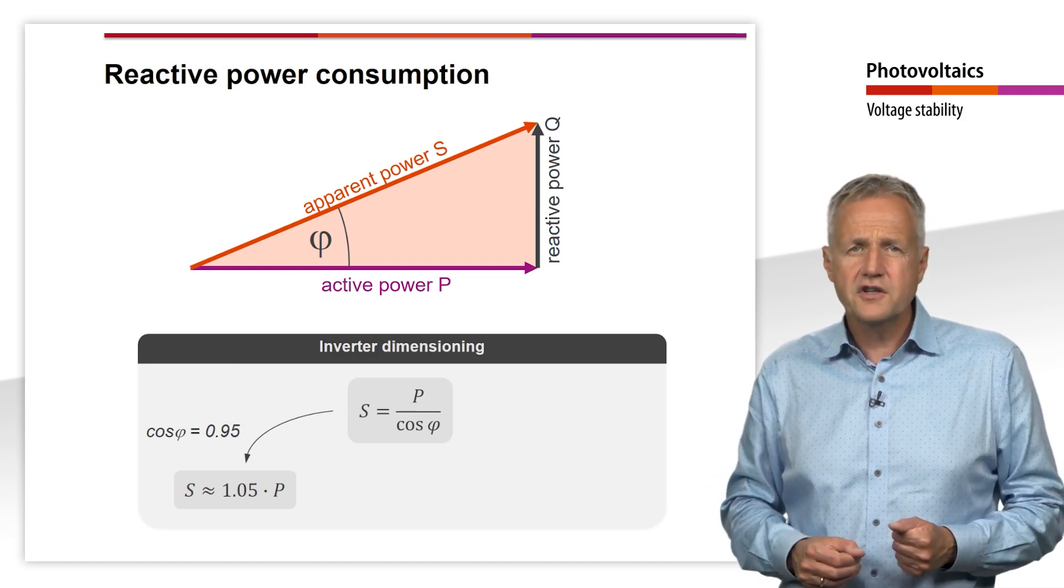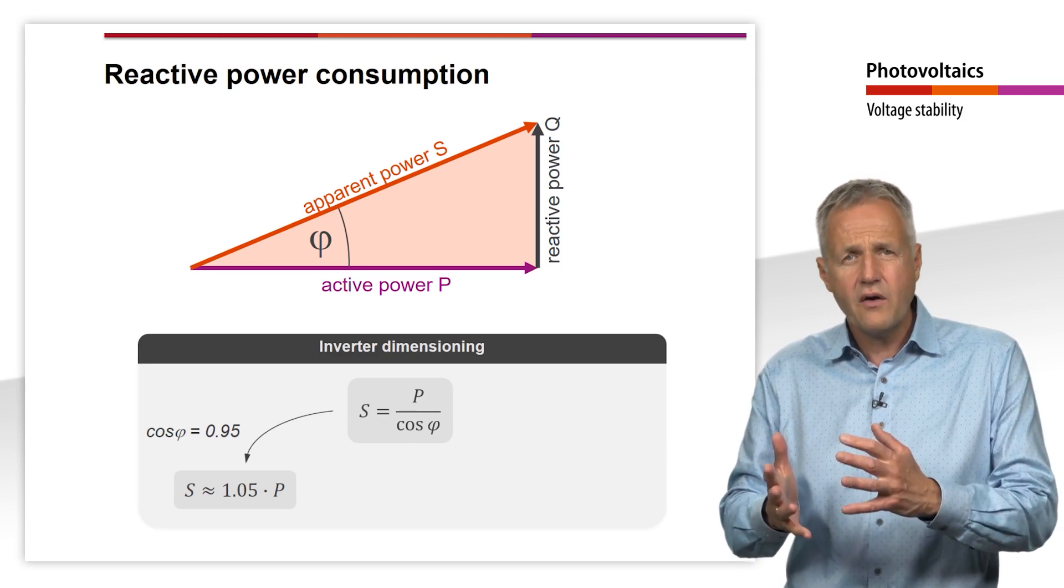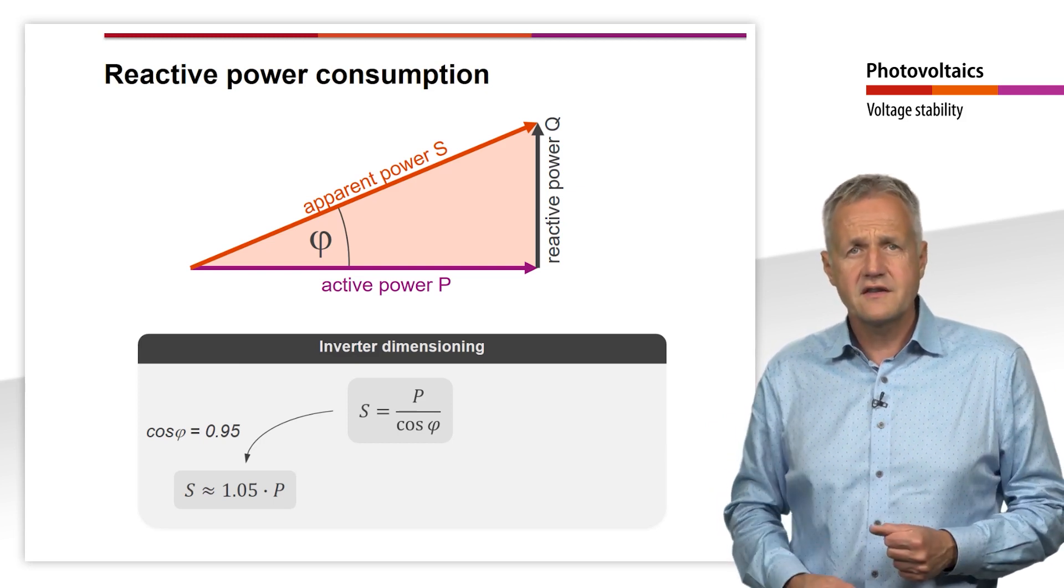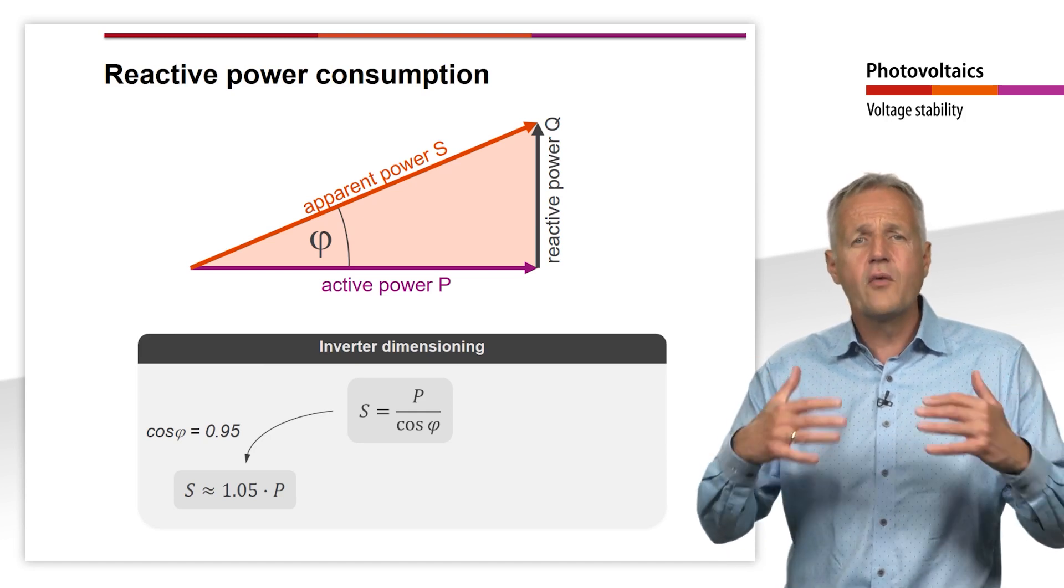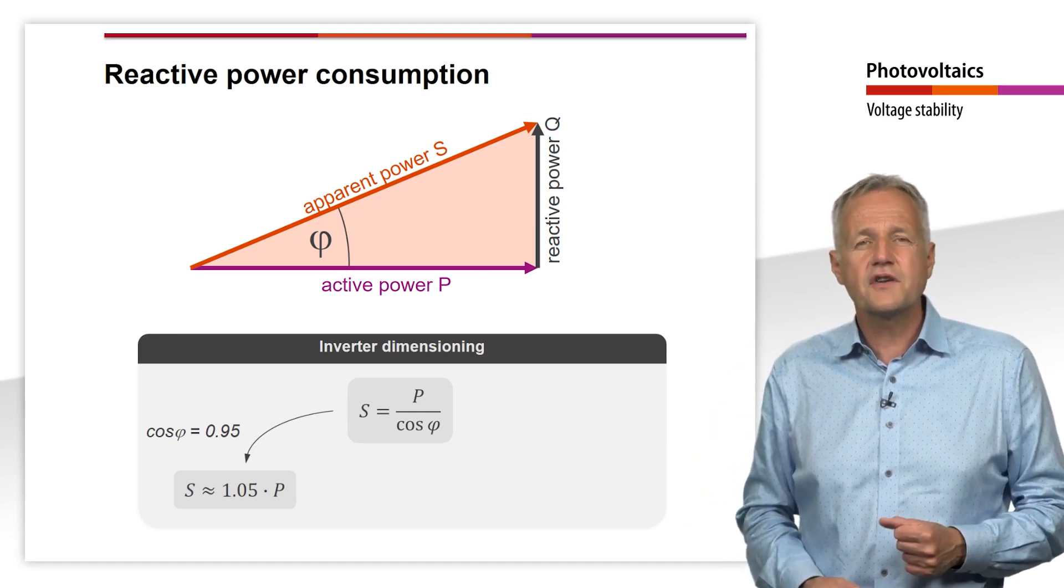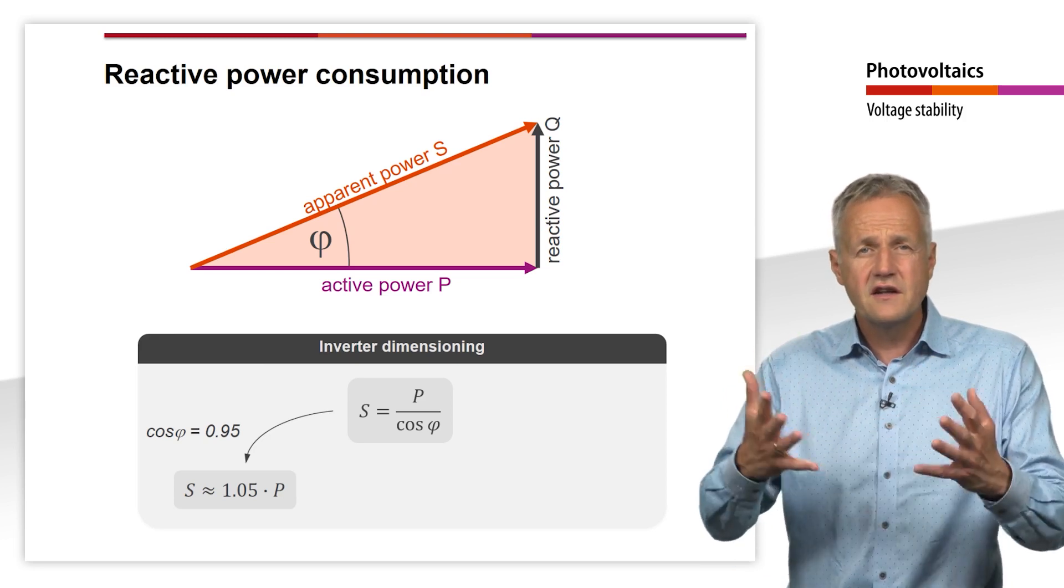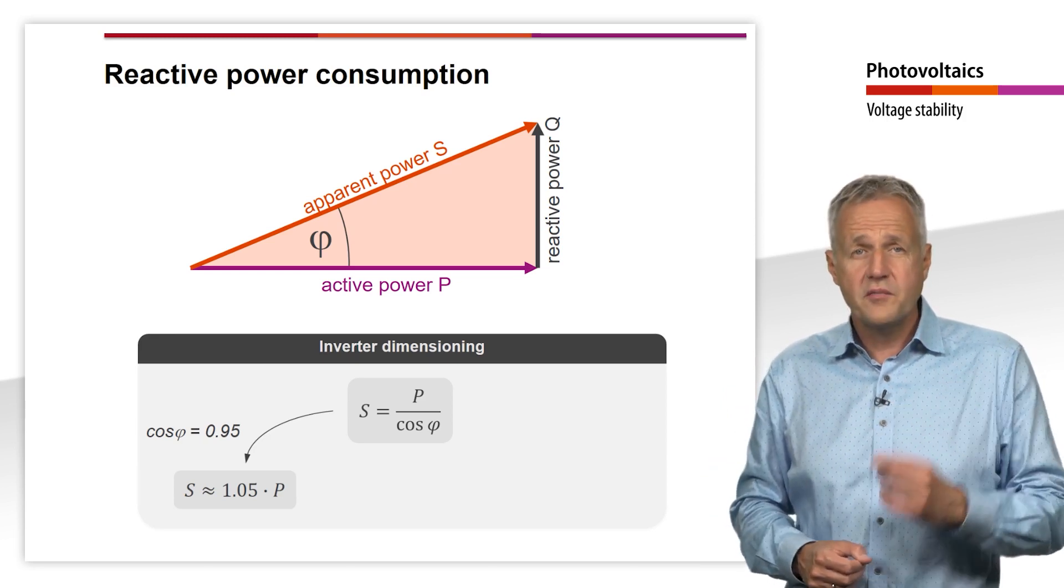For the dimensioning of the inverter, it is not the active power but the apparent power that is decisive. The inverter must therefore be designed a little more than 5% larger in order to be able to feed in the required reactive power.